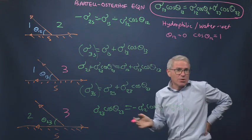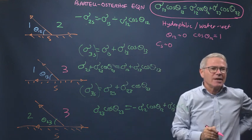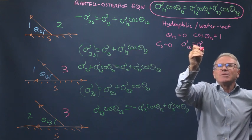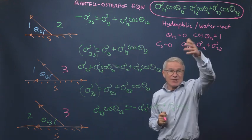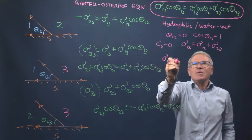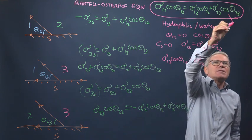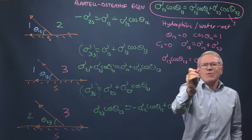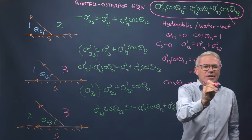We'll also assume we have a spreading oil, so spreading coefficient approximately zero. So sigma 1,3 equals sigma 1,2 plus sigma 2,3. In that case, let's go through the equations. We get sigma 1,3 cos theta 1,3 equals sigma 1,2 - and this cosine is close to 1 - plus sigma 2,3. That's sigma 1,3. So cos theta 1,3 is roughly 1, theta 1,3 is close to zero.